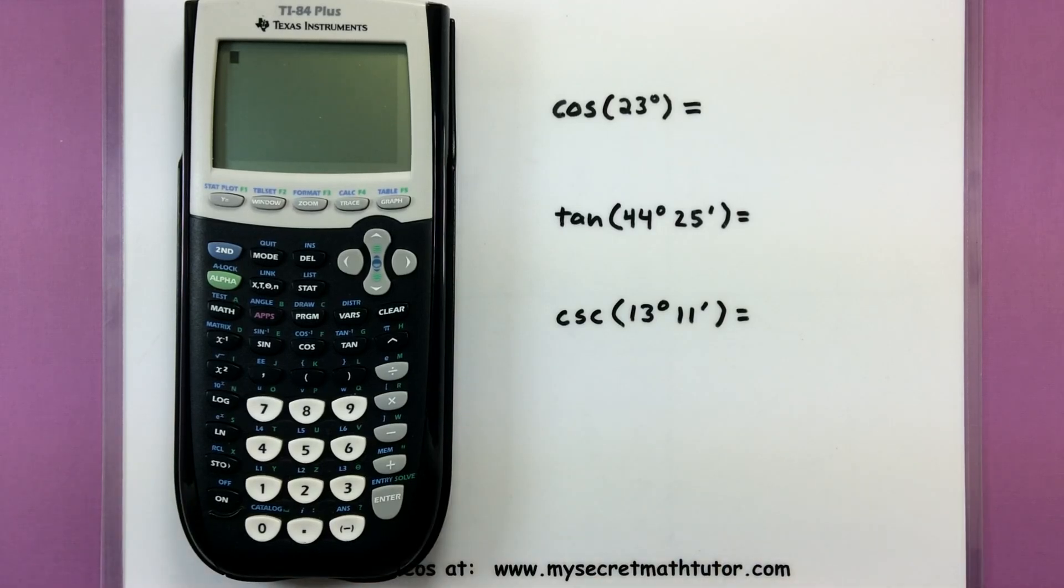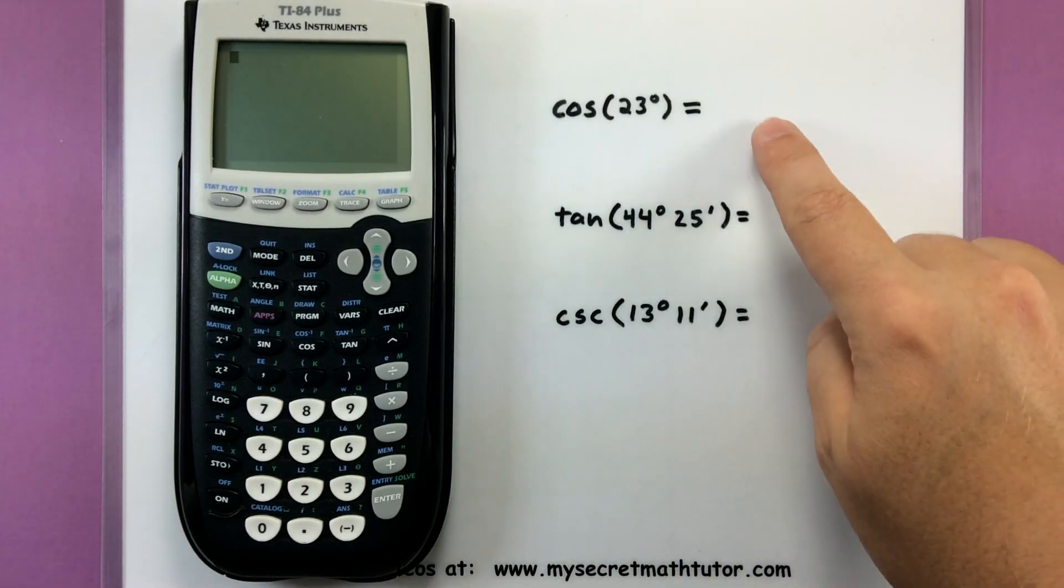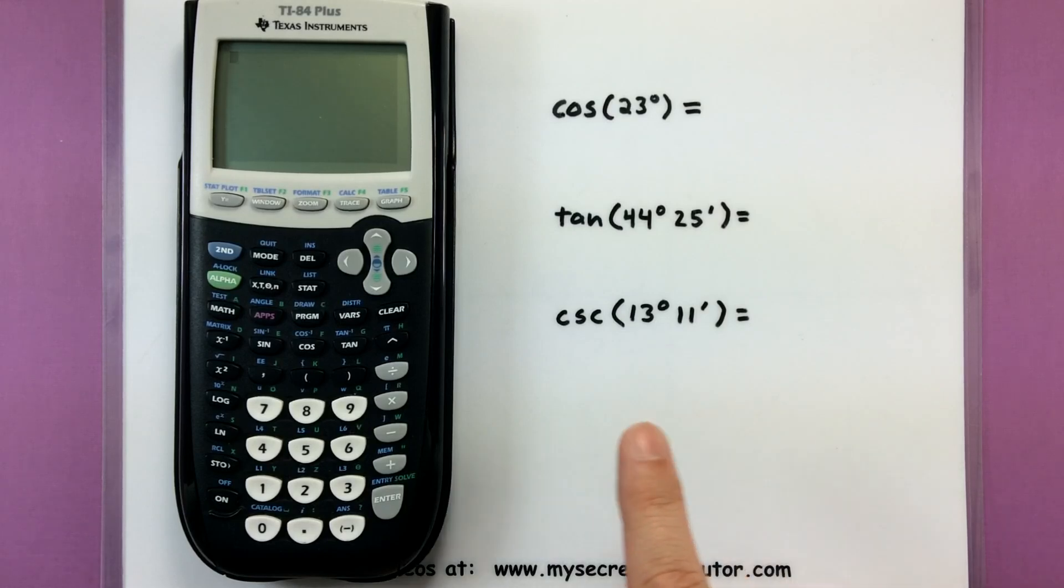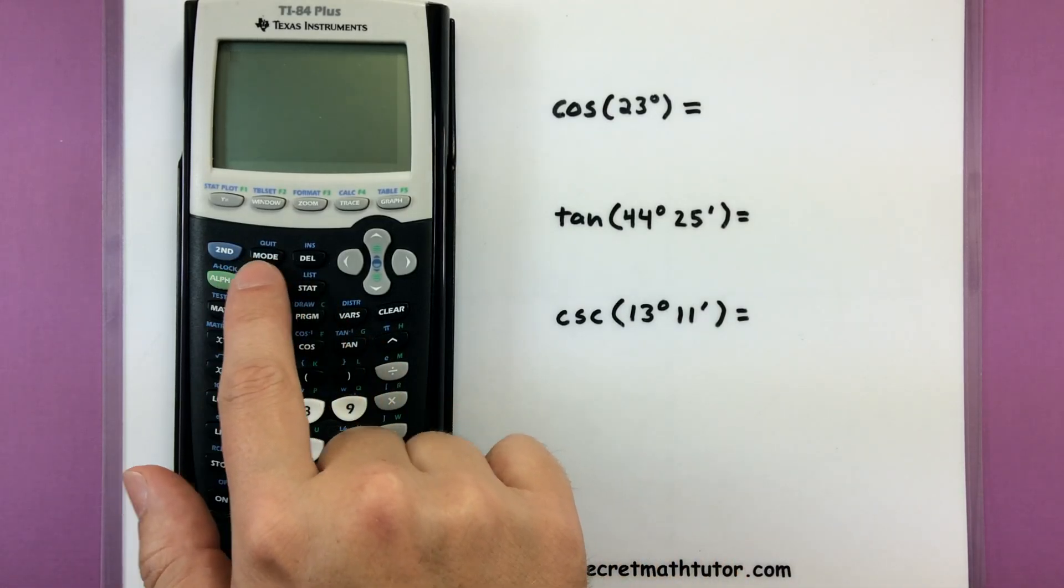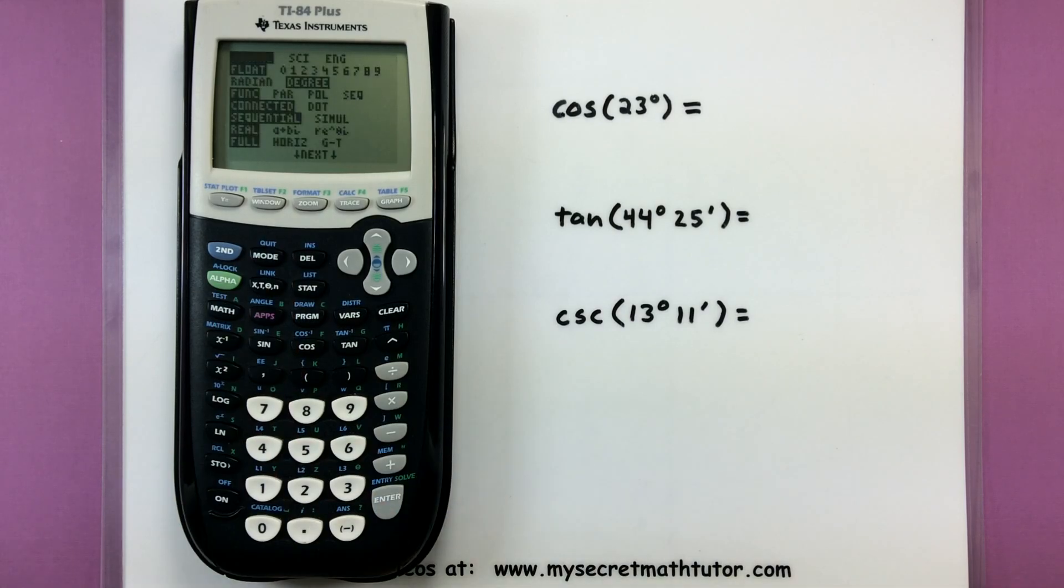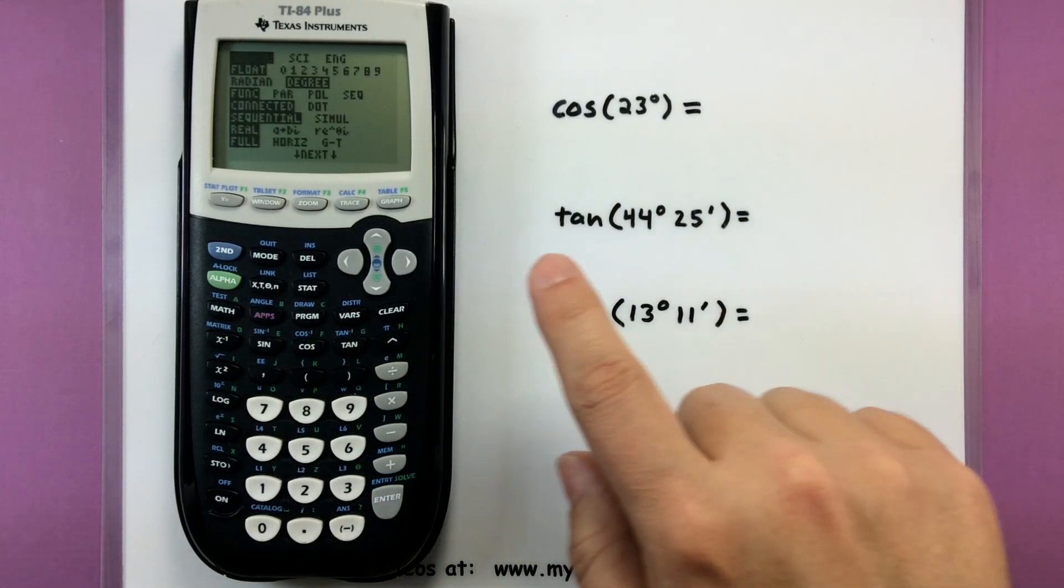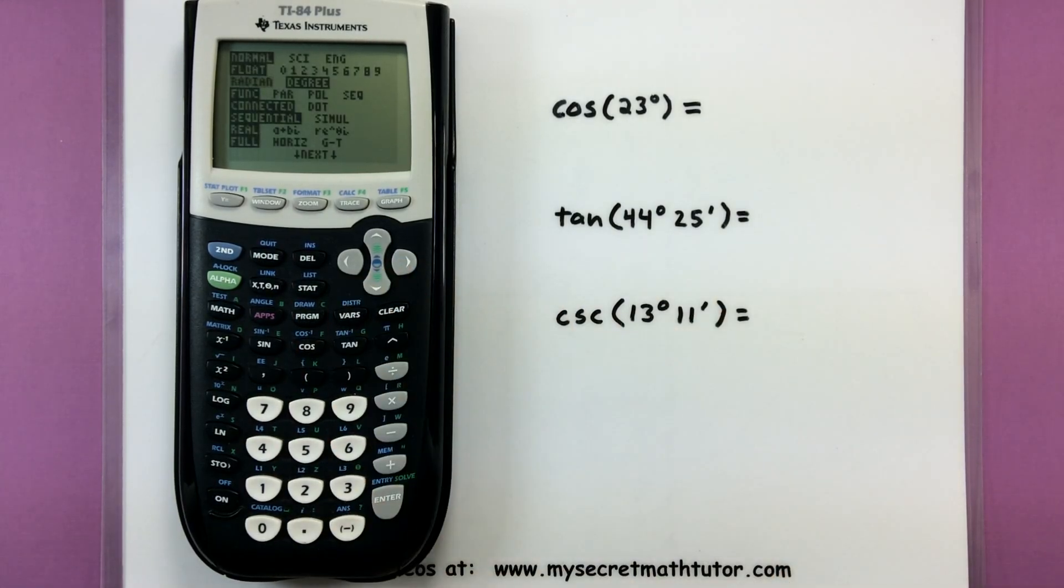The very first thing you want to do with your calculator when finding some of these trigonometric values is check the mode on your calculator. On mine the mode is right near the top here, so if I press it it will give me lots of different options. A major thing that you want to check is whether you're typing in radians or degrees.